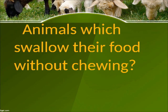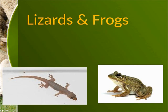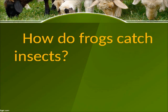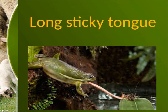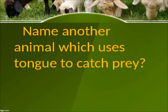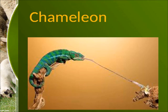Animals which swallow their food without chewing: lizards and frogs. How do frogs catch insects? With a long sticky tongue. Another animal which uses its tongue to catch prey is the chameleon.